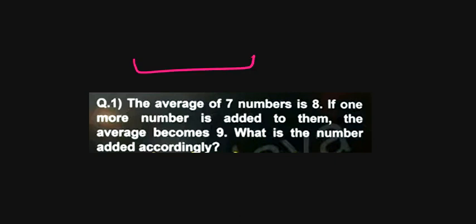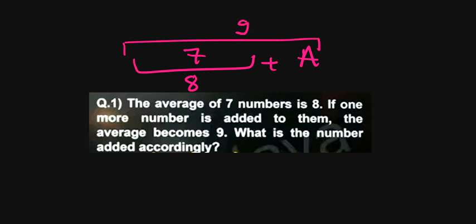The question is: the average of 7 numbers is 8. If one more number is added to them, then the average becomes 9. So what number is required?